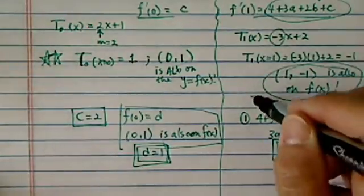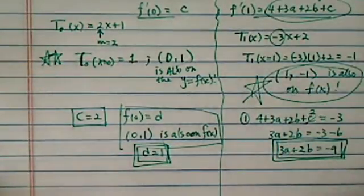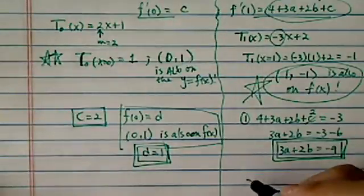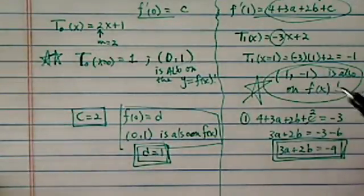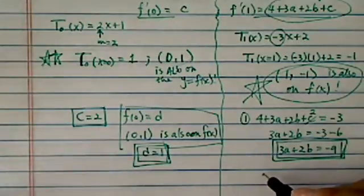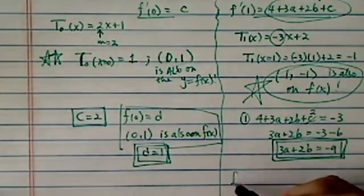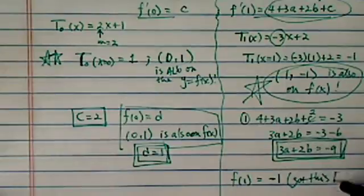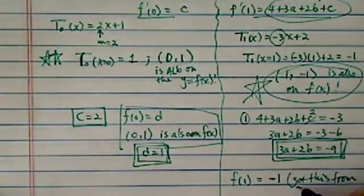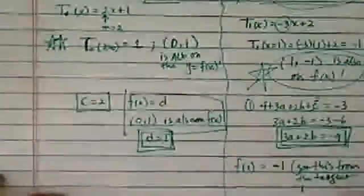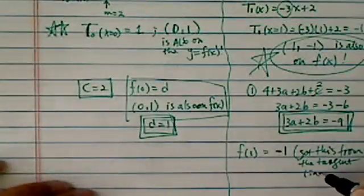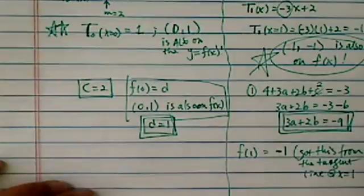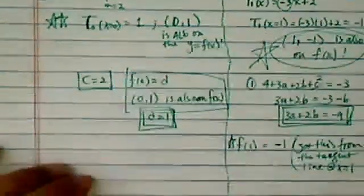Now this is where it comes into play. We know the function has the point (1, -1) on it. So if we substitute, f(1) equals -1. We got this from the tangent line at x equals 1. This is the important part of this problem.